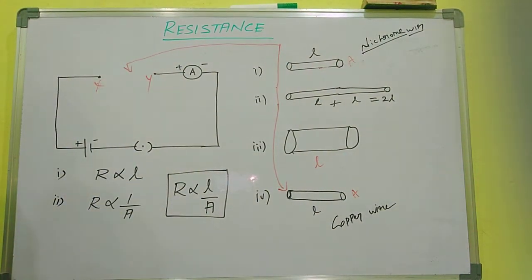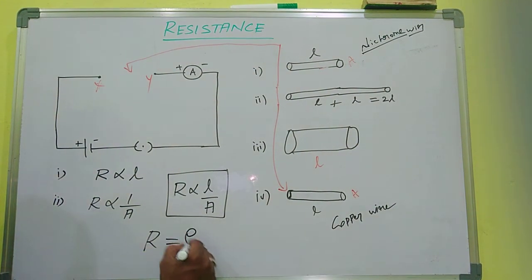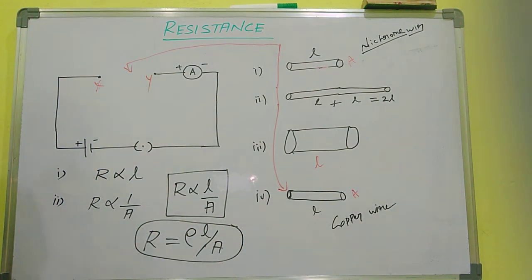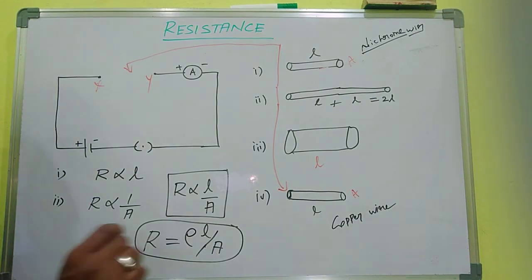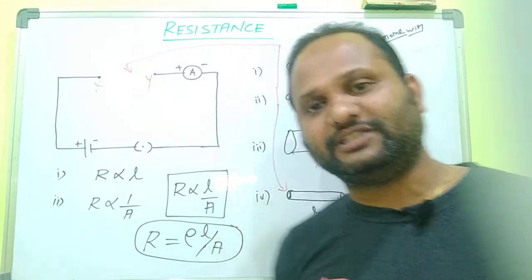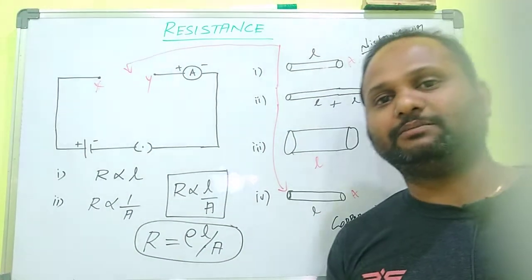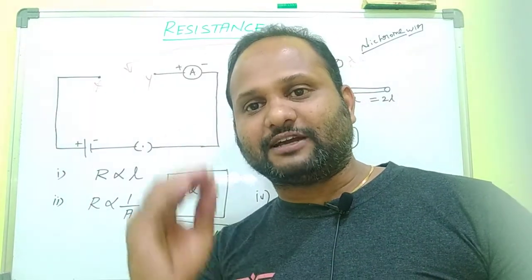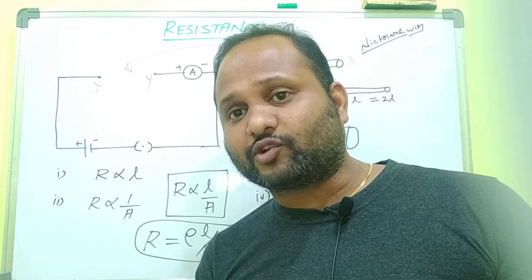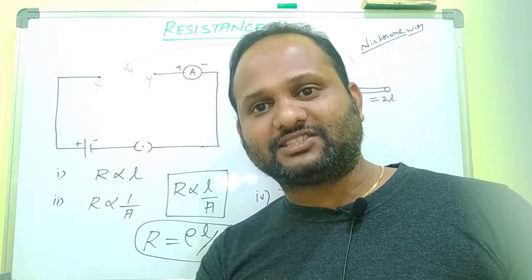When we change the proportional sign to an equal sign, we introduce a constant, rho. So R equals rho times L divided by A. Here rho is a Greek alphabet — it is the resistivity of a material. The resistivity becomes constant for a particular material. The resistivity of copper is different from the resistivity of nichrome.